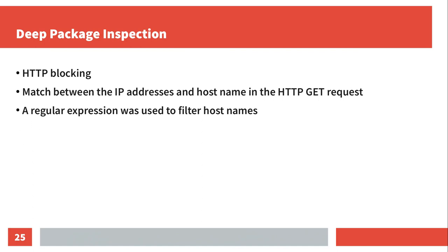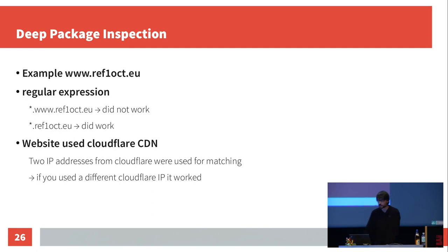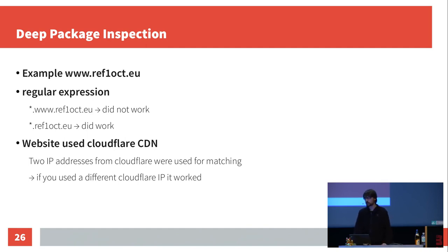The deep packet inspection was done on the HTTP layer — they matched the hostname of an HTTP GET request on some specific IP addresses, using a regular expression. Here's the example for ref1oct.eu: if you put anything in front of www.ref1oct.eu in the HTTP GET request, the filter would hit. But if you used info.ref1oct.eu, the filter didn't hit.